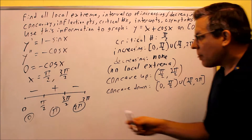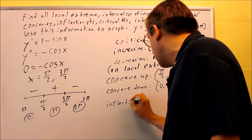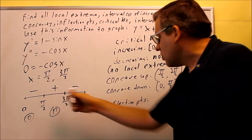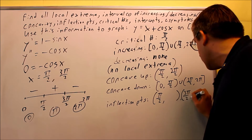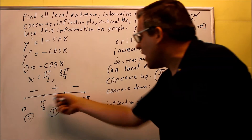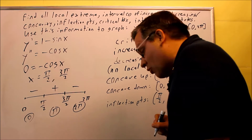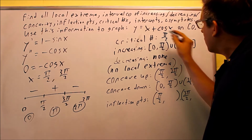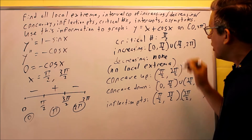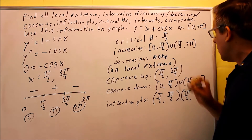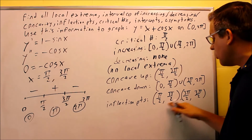We do have inflection points because there's a change in concavity. The x-values are pi over 2 and 3 pi over 2. Plugging these back into the original equation: for pi over 2, we get pi over 2 plus cosine of pi over 2, which is 0, giving the point (pi/2, pi/2). For 3 pi over 2, cosine of 3 pi over 2 is also 0, giving the point (3π/2, 3π/2).